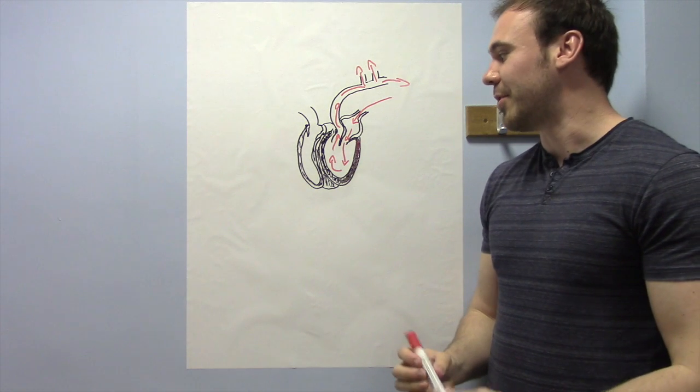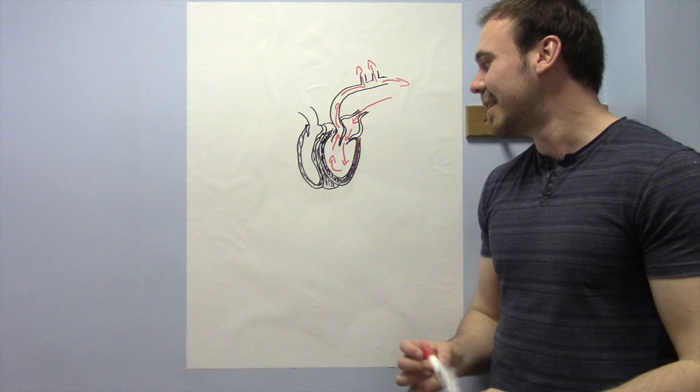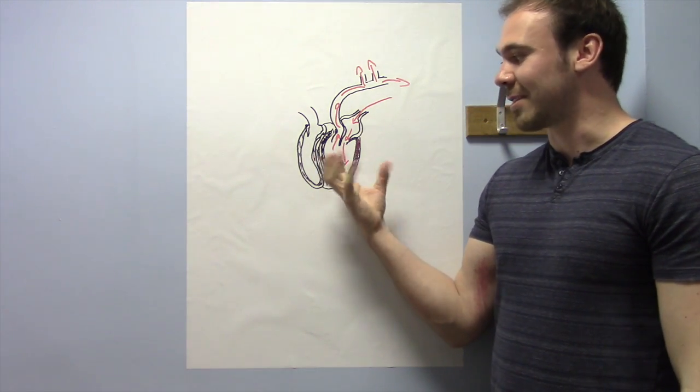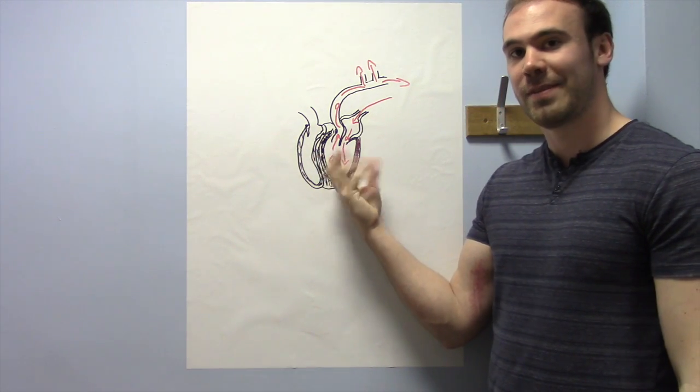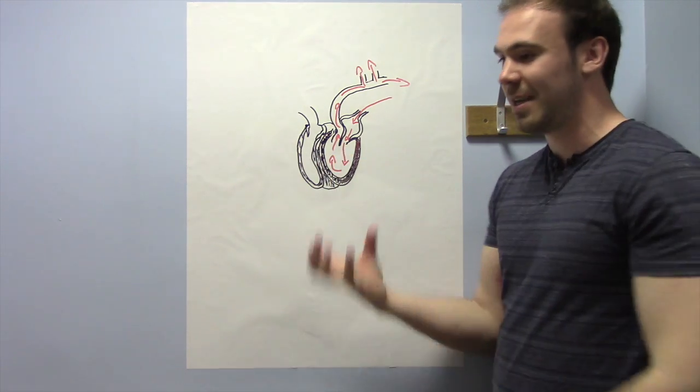But for people who have an enlarged heart due to various diseases, which we'll talk about in a minute, the heart has got bigger because it's constantly having to overwork, and so these muscles, myocardium, get much bigger.